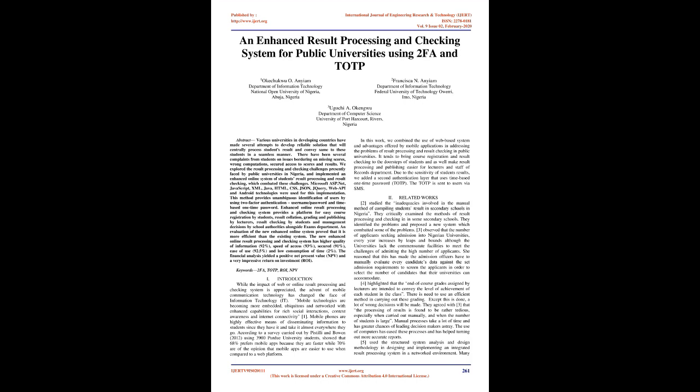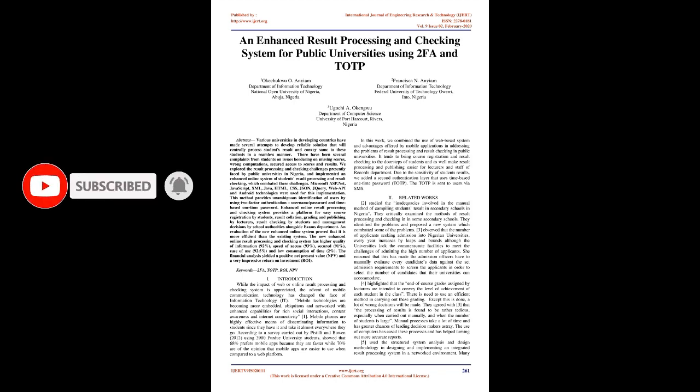username/password and time-based one-time password. The enhanced online result processing and checking system provides a platform for easy course registration by students, result collation, grading and publishing by lecturers, result checking by students and management decisions by school authorities alongside the exams department. An evaluation of the new enhanced online system proved that it is more efficient than the existing system, with higher quality of information 92%, speed of access 93%, secured 91%, ease of use 92.5%, and low consumption of time 2%. The financial analysis yielded a positive net present value (NPV) and a very impressive return on investment (ROI).